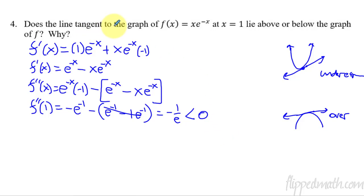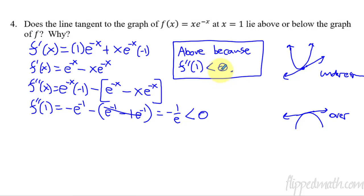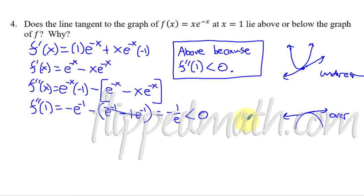So my answer: does the line tangent to the graph at x equals 1 lie above or below? Since the second derivative is less than 0, we have the concave down situation. So the tangent line is above the function — above — because the second derivative evaluated at 1 is negative. That's my answer with my justification. So now you can tell if the tangent line is above or below, whether it's an overestimate or an underestimate, just by figuring out the concavity yourself. Okay, we've covered it all. I know that was a bit long, but it was really important stuff. So rock that master check, and I'll see you in the next lesson where we will use this second derivative for more stuff.